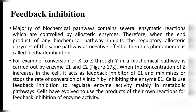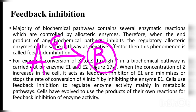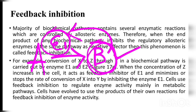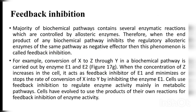Feedback inhibition: the end product of a metabolic pathway inhibits the activity of the first enzyme of that pathway. For example, if substrate A is converted to product B by enzyme E1, and the concentration of B increases in the cell, B will inhibit enzyme E1 from functioning normally — because B is already present in abundant amounts and there is no requirement for further production of B.